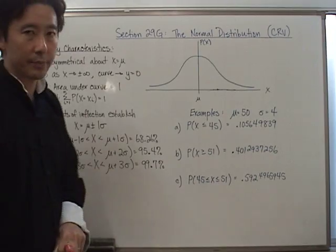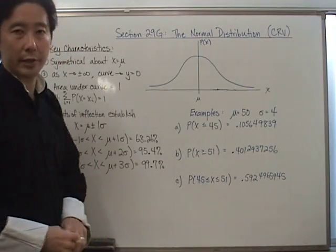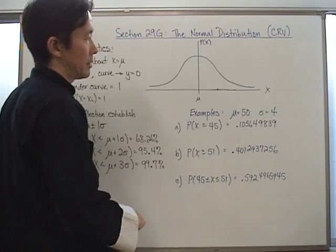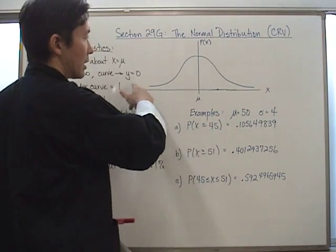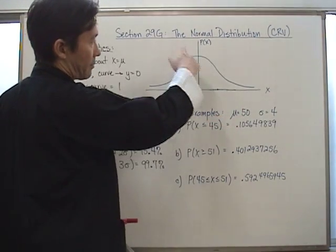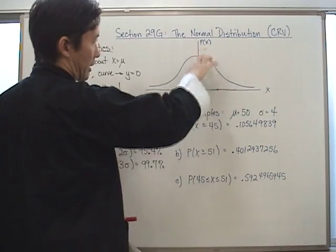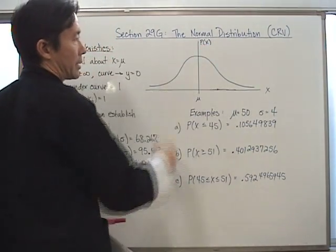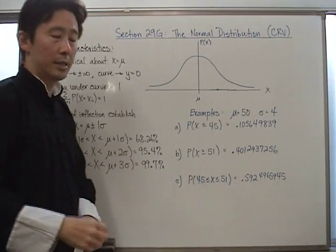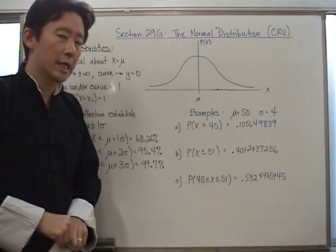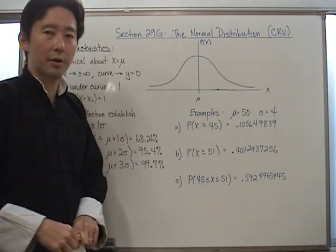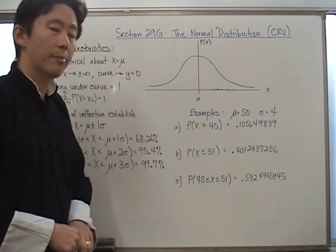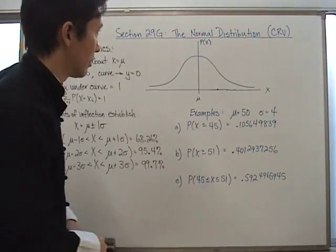We've already seen this before — this is basically the bell curve. I drew what would be considered a pretty nice bell curve. Here's your mean, those are the values of x, and here are the probabilities of x. Let's go over some of the key characteristics of this curve before talking about how to calculate probabilities of the normal distribution.